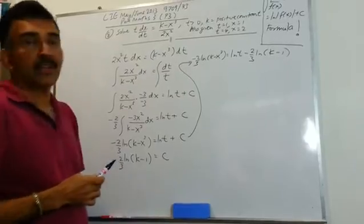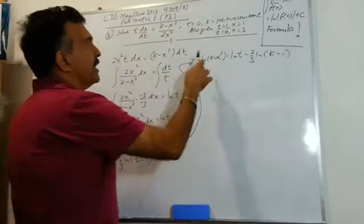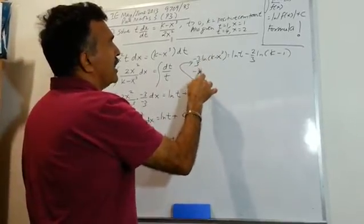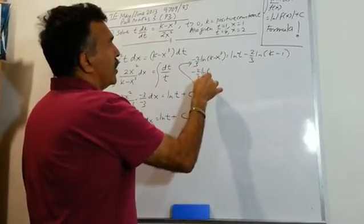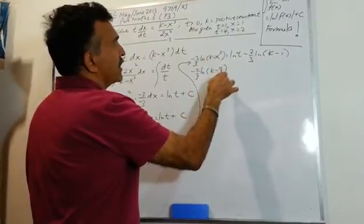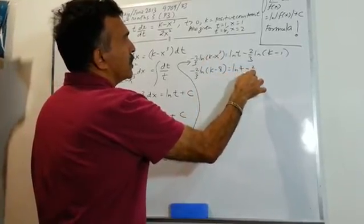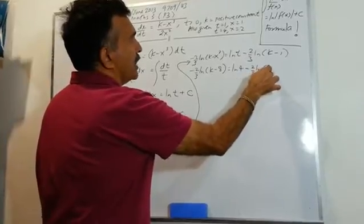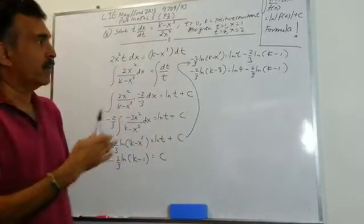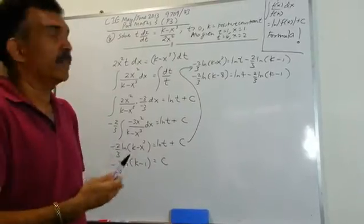We have another initial condition: t = 4, x = 2. So let's plug it in. We get -2/3 · ln|k - 8| = ln 4 - 2/3 · ln(k - 1). Now we have to deal with a logarithmic equation and we have to solve it.